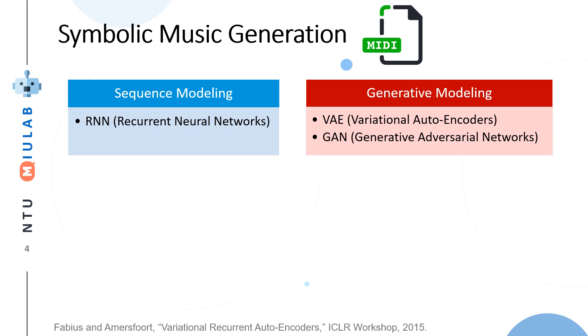The first one is sequence modeling. We can treat the note event as sequential information and use recurrent neural nets to model this sequence. Another direction is about generative modeling, including variational autoencoders and generative adversarial networks. It tries to generate diverse information via controllable codes. Our approach uses variational recurrent autoencoder. It combines the benefits from RNN and VAE.